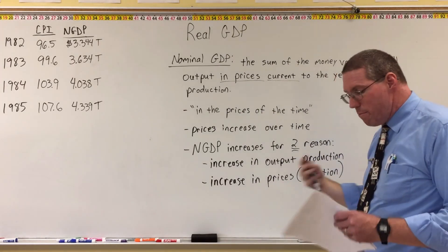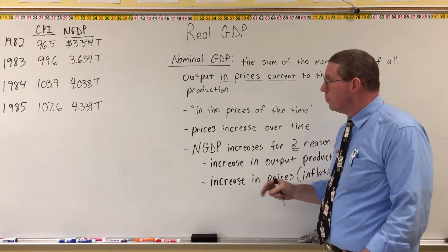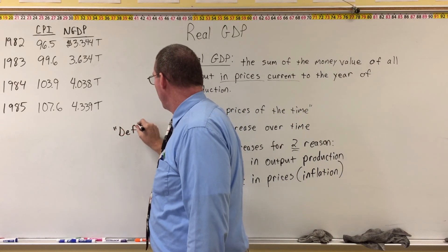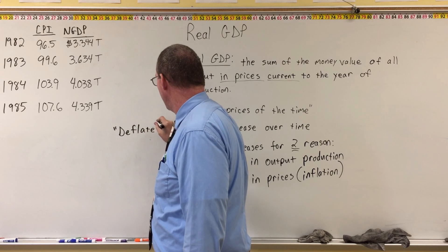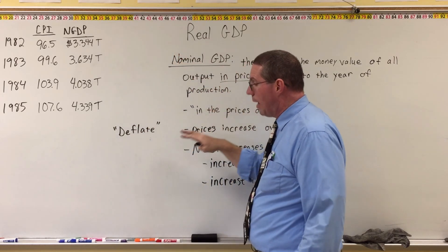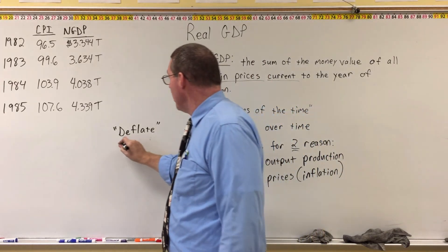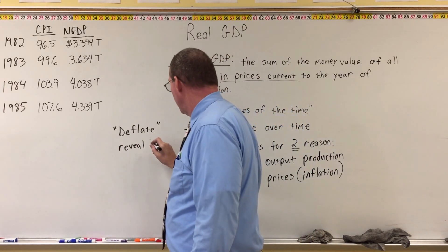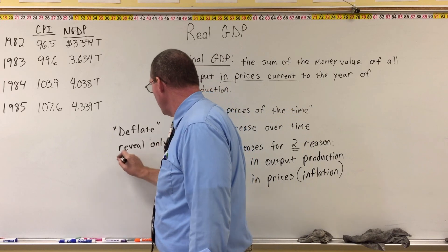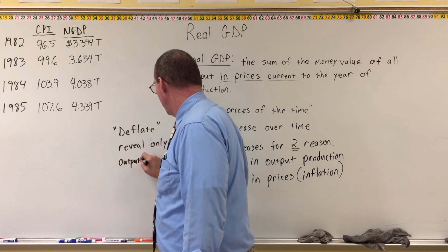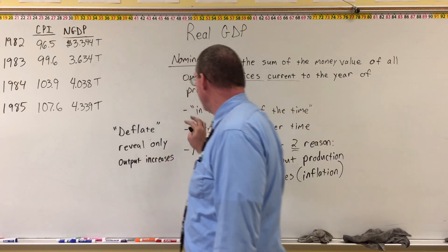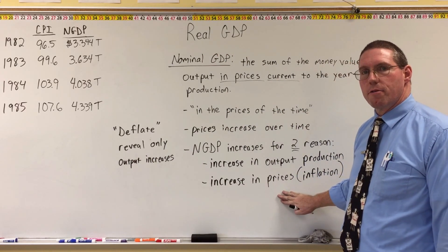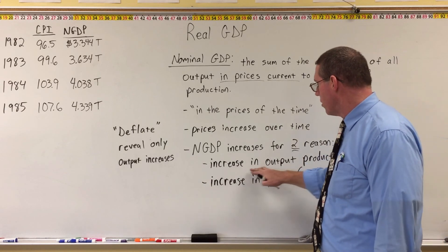We want to deflate — we want to take out the inflation from nominal GDP so that we can reveal only the output increases. We're not interested in being fooled by the increases in prices over time. We want to make a comparison where the only thing we're comparing are increases in output production. And that's where real GDP comes in.